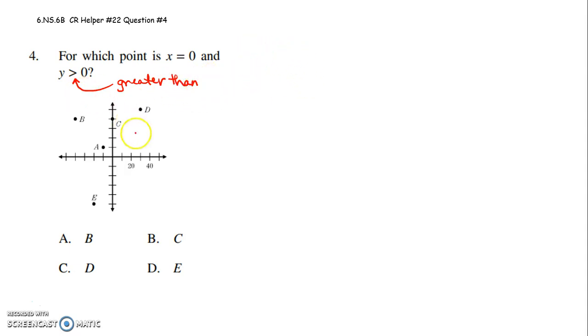So let's just make sure you know coordinate points are always x, y. So like here, point D, the x value would be positive, and the y value would be positive. Right here in the first quadrant,